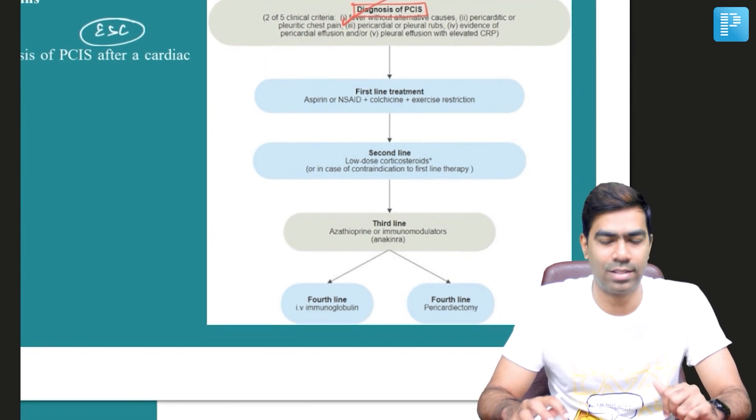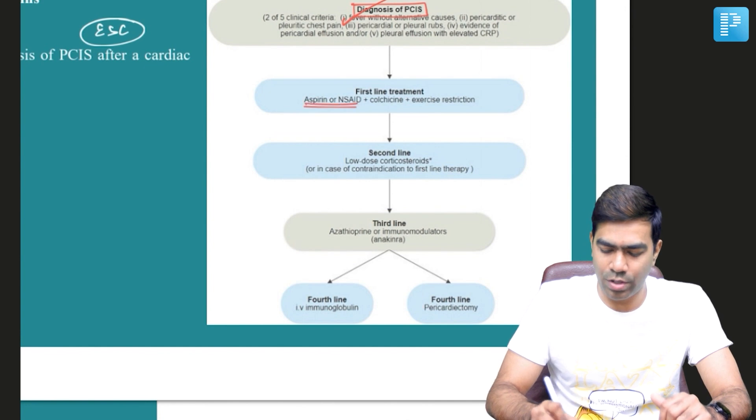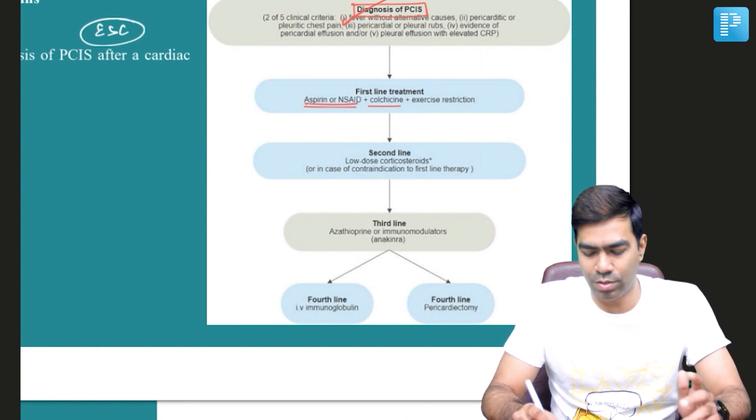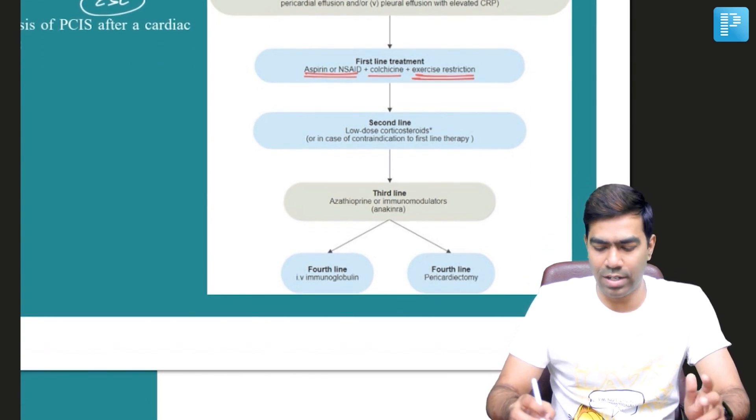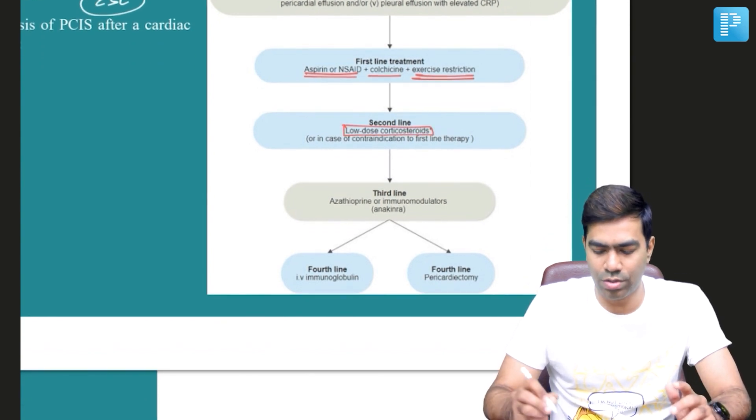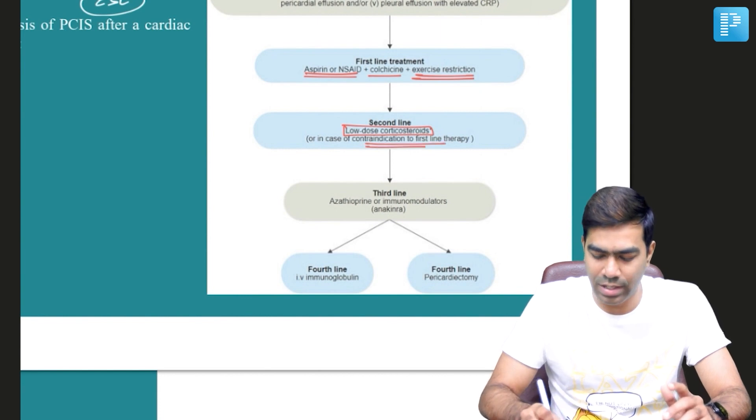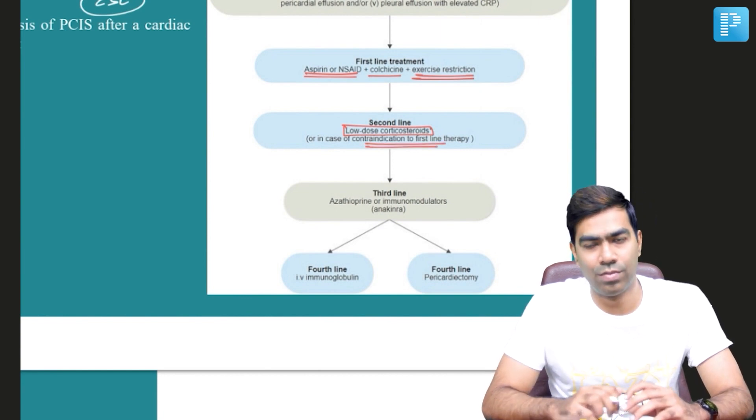It's also very important for your NEET-PG exams. The first-line treatment is going to be with aspirin or NSAIDs plus colchicine to prevent the risk of relapse, and of course you're going to go for exercise restriction as well. Second-line treatment is going to be with low-dose corticosteroids, especially if there is a contraindication to first-line therapy.